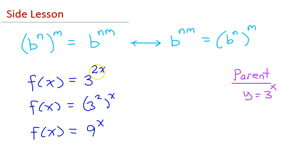So we no longer see the horizontal dilation by a factor of 1 half. Now we have no transformation, but we have a new base.